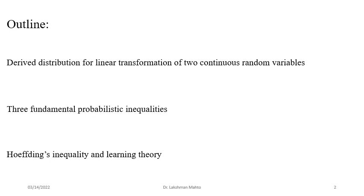All these inequalities are developing error bounds for probability. What kind of bounds - probabilistic bounds - play a very important role in learning theory, specifically in what we call sample complexity: what would be the required number of training examples or sample size so that we can get approximately a good outcome. Sample complexity is very important in learning, and those things will be provided by Hoeffding's inequality and its various variants.